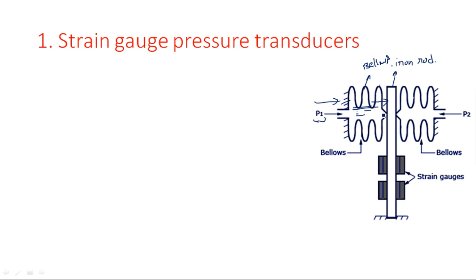So the iron rod will have stretching towards the right side direction. Because of this bending, the strain gauges connected on this iron rod will have resistance change due to compression and elongation. When we apply pressure P1 from left to right, this bellow has influence on the iron rod and the iron rod bends in the right-hand direction. These two strain gauges on the right-hand side will be compressed.